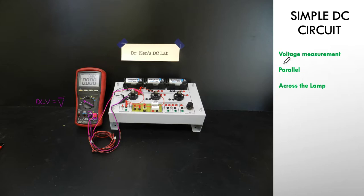So that's voltage measurement, always in parallel. And in this particular case I'm across the lamp. In this simple circuit I'm also across the supply, but it's important to understand that I wanted to measure the voltage drop across the lamp itself.